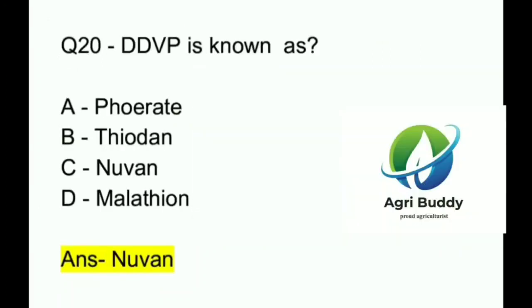Question 20. DDVP is known as? A. Phorate. B. Thiodine. C. Nuvan. D. Malathion. And the answer is Nuvan.